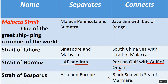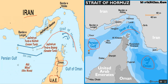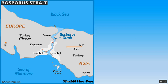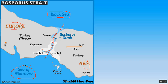The Strait of Bosporus separates Asia from Europe and connects the Black Sea with the Sea of Marmara. On the map, the Bosporus Strait connects these two water bodies — the Black Sea and the Sea of Marmara — while separating Asia from Europe.